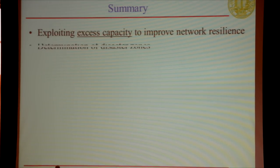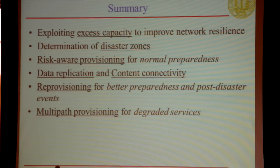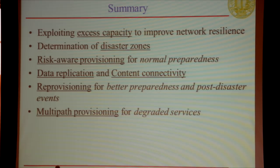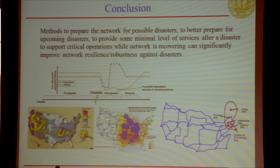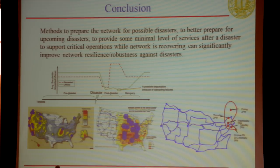To summarize: exploiting excess capacity to improve network resilience, determining disaster zones through geology maps, and performing risk-aware provisioning for normal preparedness are key. Data replication and content connectivity are important concepts with cloud-based services. Reprovisioning for better preparedness and post-disaster recovery, and multipath provisioning to provide degraded or reduced level of service when full service can't be guaranteed. Being prepared, then being better prepared, and post-disaster providing as much good quality service as possible — that's what we should strive for.